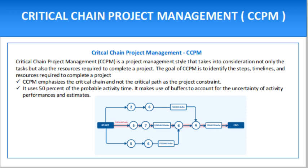A major problem with critical path project management is that while it works in theory, it fails to consider that in the real world you do not have unlimited resources. On your shop floor, you only have so many workstations and staff members, and you also have real-life constraints and bottlenecks that determine how much work can be completed. CCPM takes these factors into consideration to create a more holistic and realistic schedule. The critical chain is the longest path in the schedule and considers activity interdependence and resource constraints.